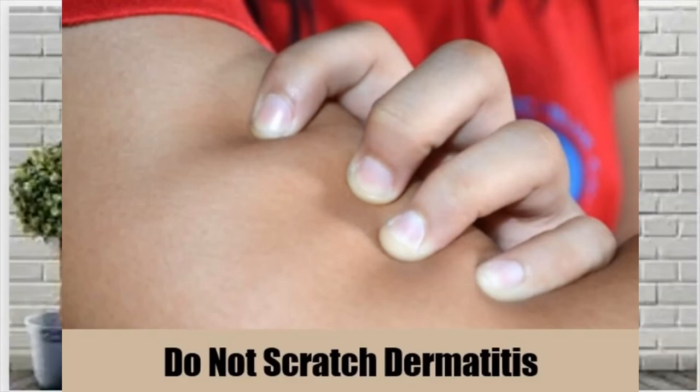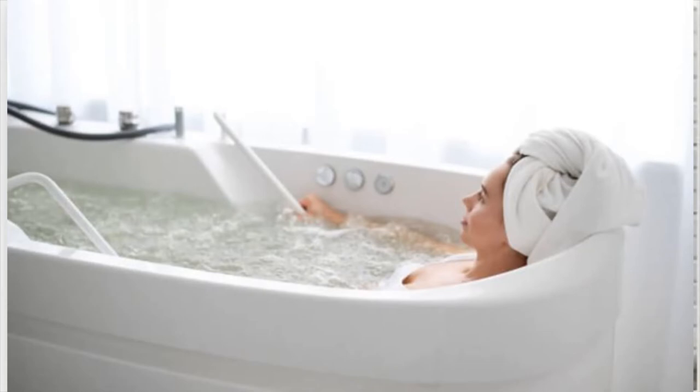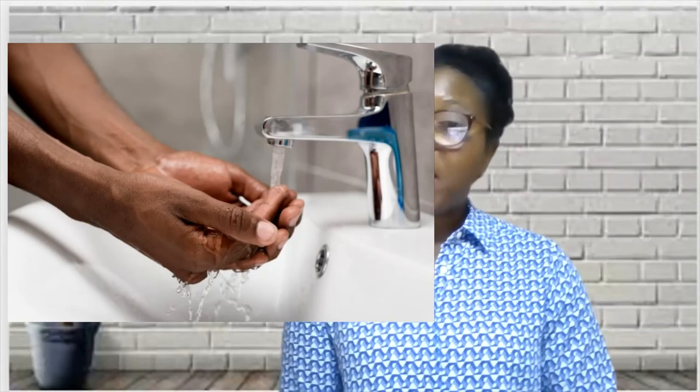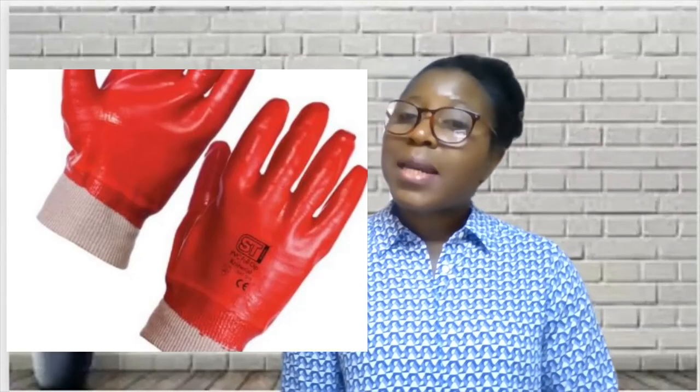Number four: avoid scratching — this is very essential because if you scratch continuously you can develop an infection. Trim your nails, and if you can't keep from scratching an itchy area, cover it with a dressing. Number five: soak in a comfortable cool bath; sprinkle the water with baking soda or an oatmeal-based bath product. Number six: protect your hands — rinse and dry your hands well and gently after washing, use moisturizers throughout the day, and choose gloves based on what you're protecting your hands from.